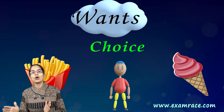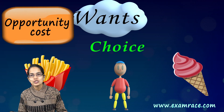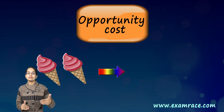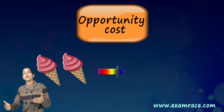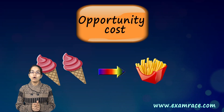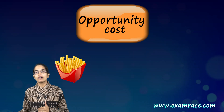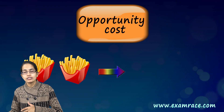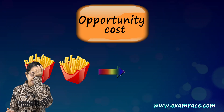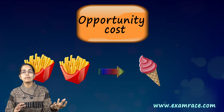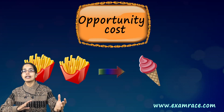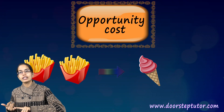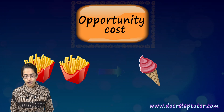That is where opportunity cost comes into play. For two ice creams I can have one pack of french fries, or for one pack of french fries I can have half an ice cream, or for two packs of french fries I could have one ice cream. So that's the kind of opportunity cost — if I want to have one, I'll have to sacrifice the other.